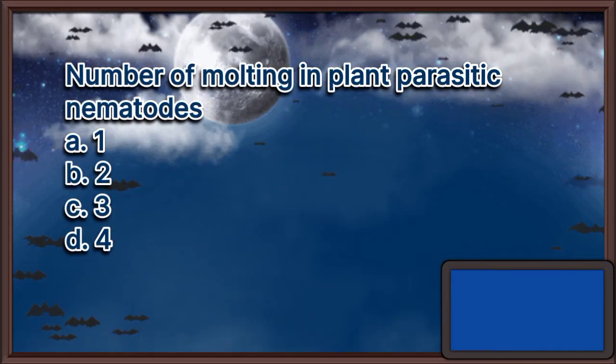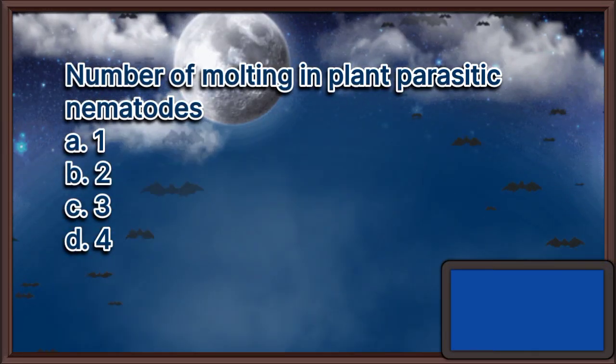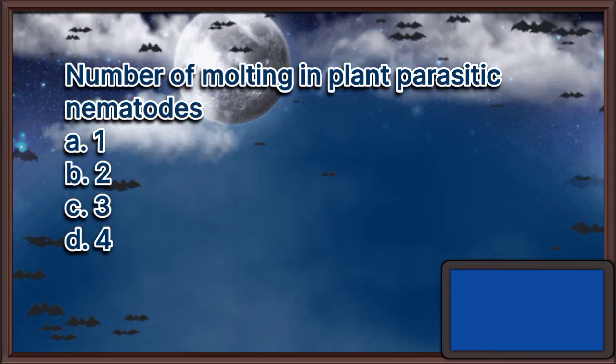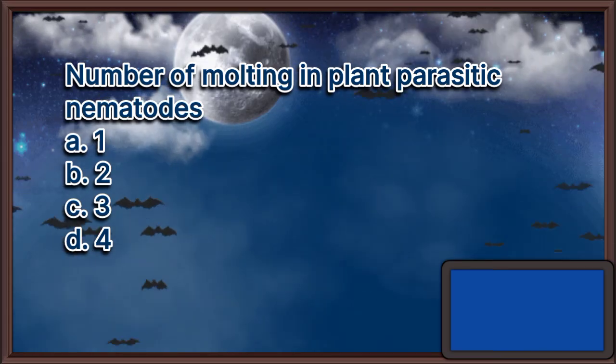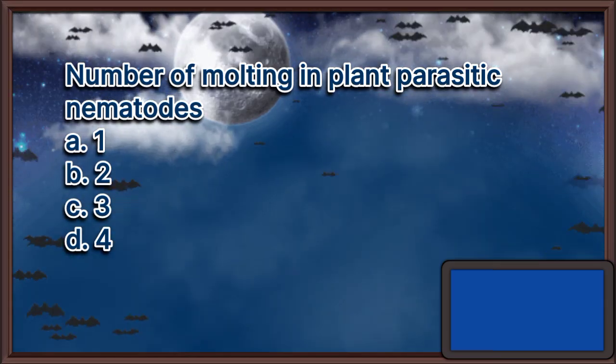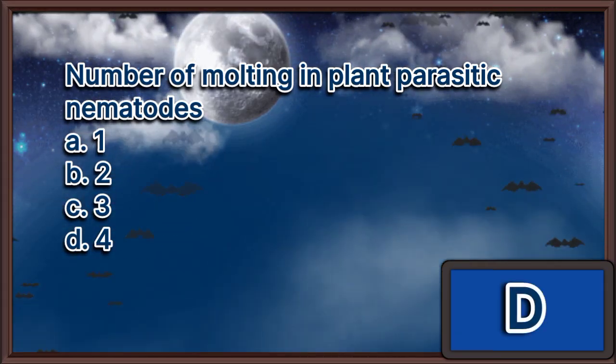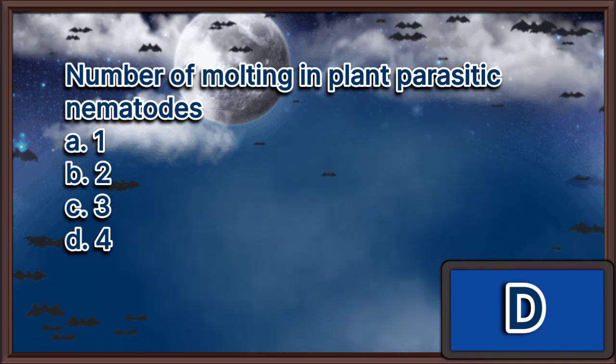Number of molting in plant parasitic nematodes: A. 1, B. 2, C. 3, D. 4. The answer is letter D.